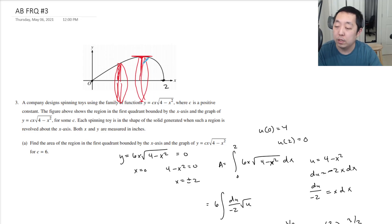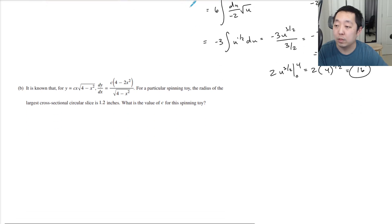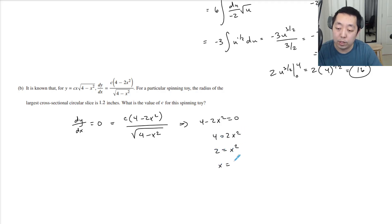Where is y maximum? y is maximum when dy/dx = 0. They gave this to you already: it's c(4-2x²)/√(4-x²). That really happens when the numerator is 0, and c is non-zero, so 4 - 2x² = 0. Therefore, 2 = x², so x = ±√2. We're in the positive quadrant, so we only care about positive √2.